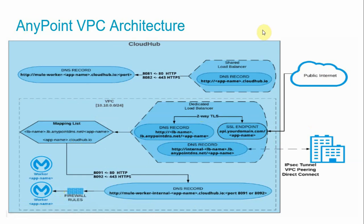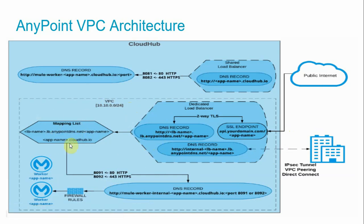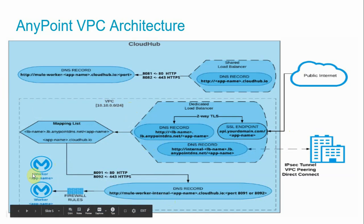To summarize the architecture: firewall rules 8081 and 8082 are public ports accessible over HTTP and HTTPS respectively via the shared load balancer. Ports 8091 and 8092 are private ports accessible only within the VPC over HTTP and HTTPS respectively. For private port applications, use the dedicated load balancer. The DLB applies mapping rules and transfers the request to the appropriate cloud app application to serve the request.